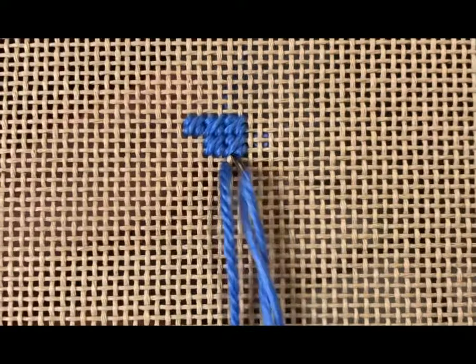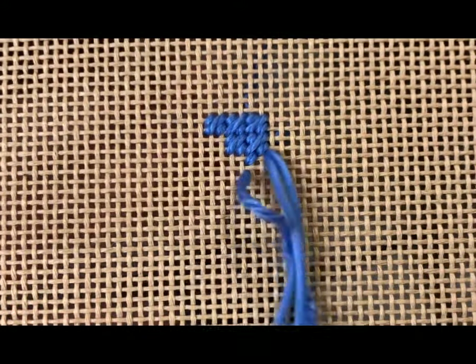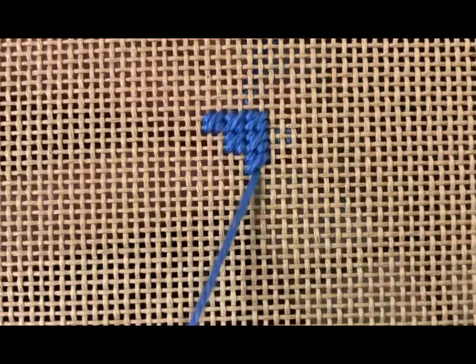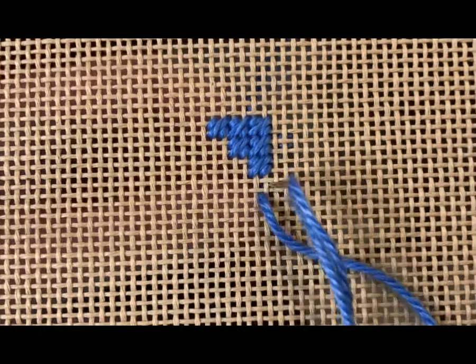And now I will complete my down row. And you can see all these little boxes that I am creating. Now it's nice to work this stitch diagonally because I can just go down, reverse the stitch, and go right back up.